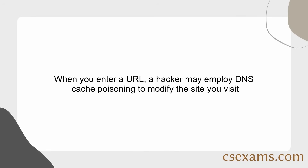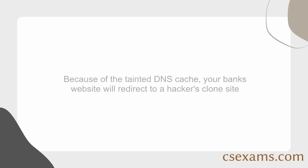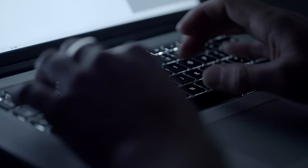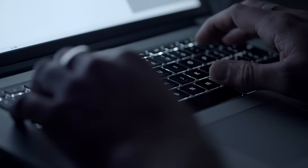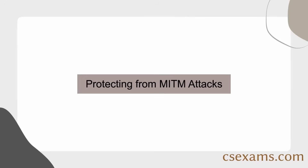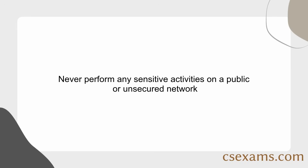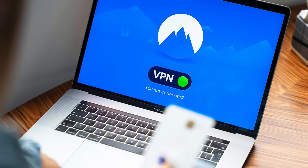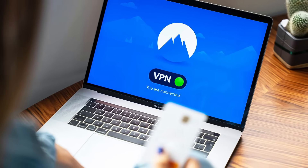When you enter a URL, a hacker may employ DNS cache poisoning to modify the site you visit. Because of the tainted DNS cache, your bank's website will redirect to a hacker's clone site. This clone site will appear to be the actual thing, and if you're not careful, you'll end up providing the false site with your login information. Protecting from MITM attacks: never perform any sensitive activities on a public or unsecured network. When you log into a sensitive site, always check for HTTPS in the address bar. You can also use a VPN for better privacy.